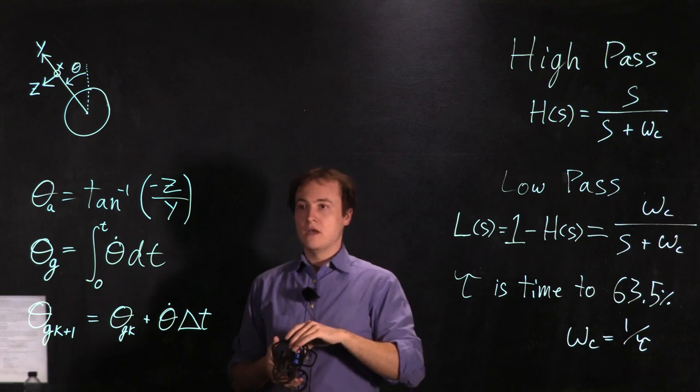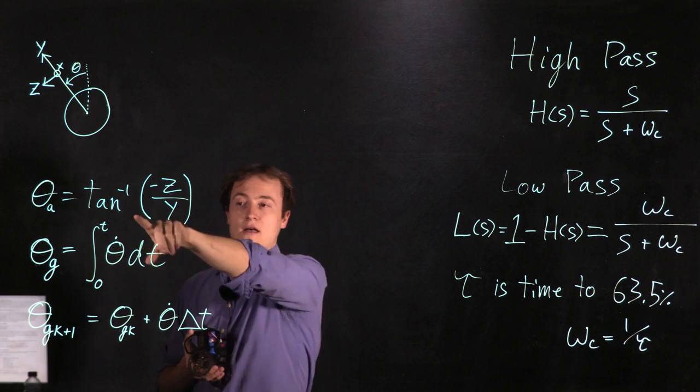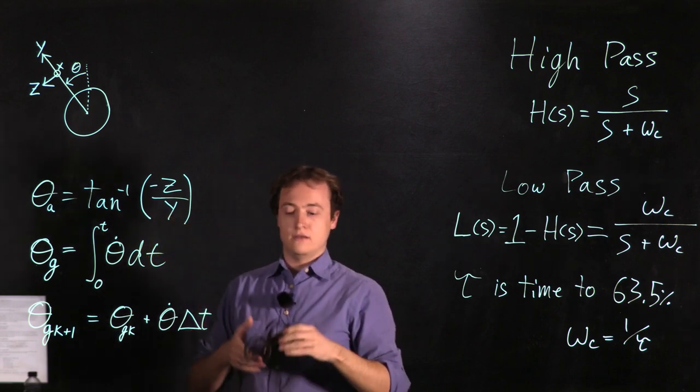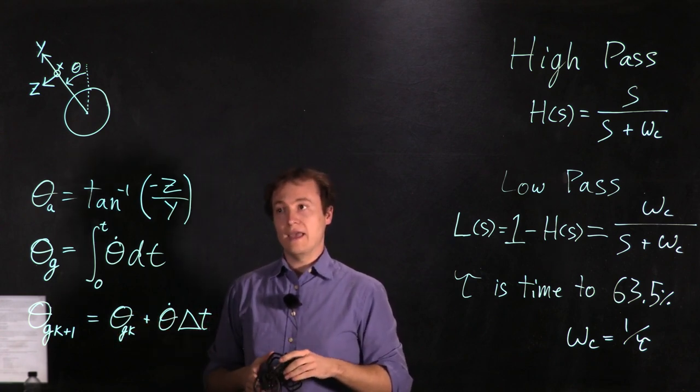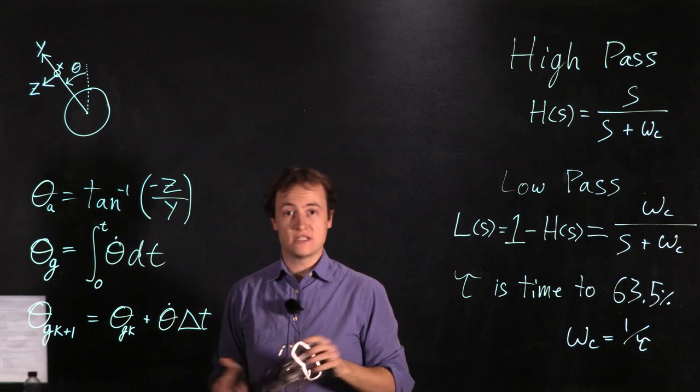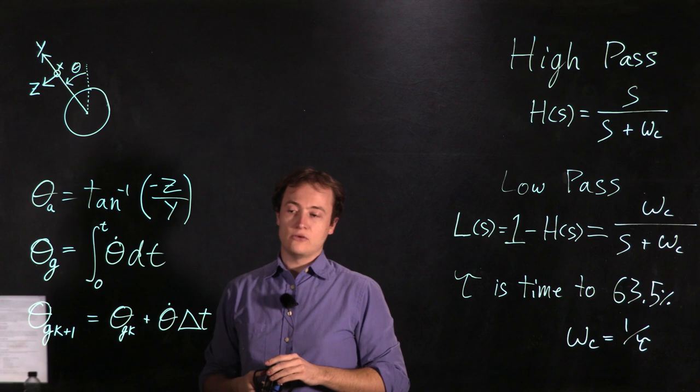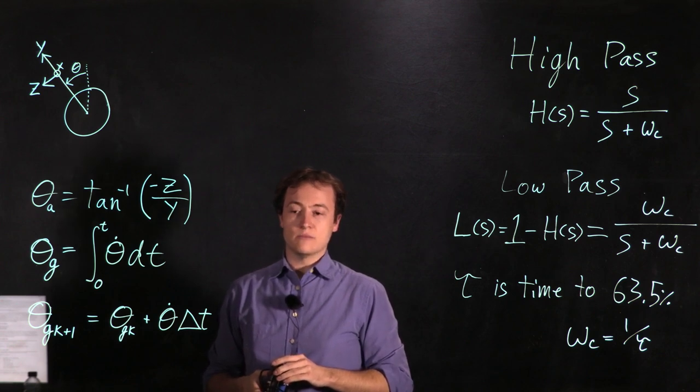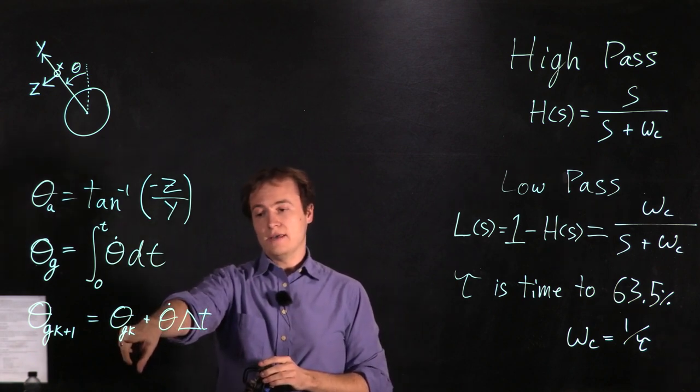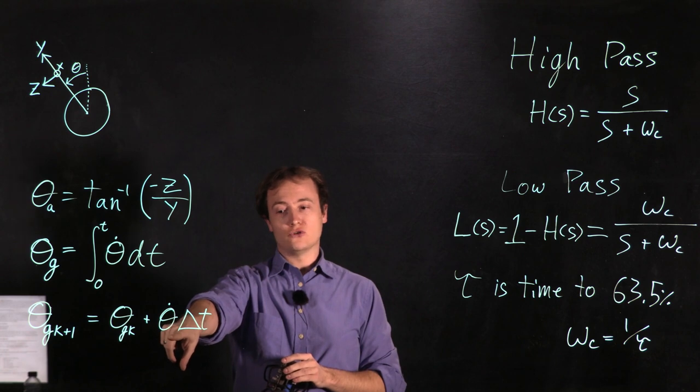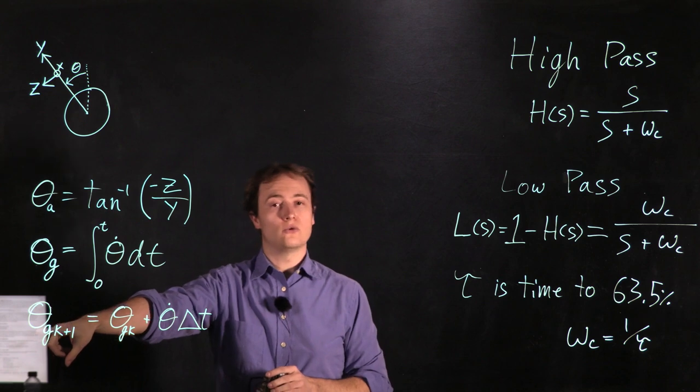Now in practice you're going to be implementing these two in software. The inverse tangent is quite easily implemented with any number of math libraries. I would suggest looking at the atan2 function in the standard C library. For integrating the gyroscope value you can simply use a simple Euler integration by adding to an accumulator theta_gk the current rate of rotation times your time step and then accumulating that over time to obtain your current theta estimate.